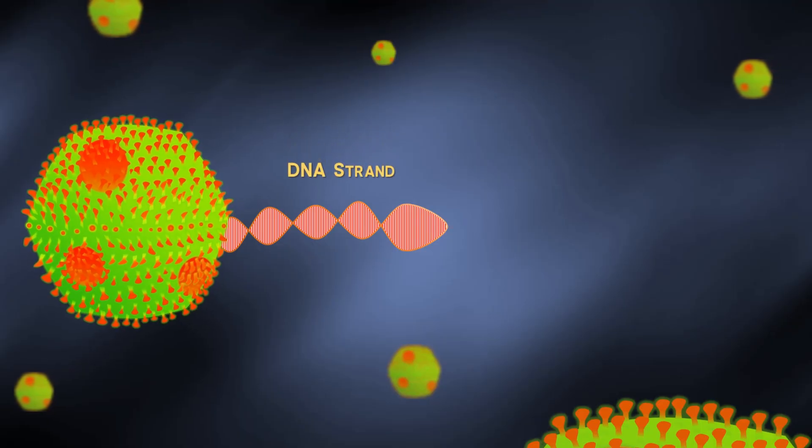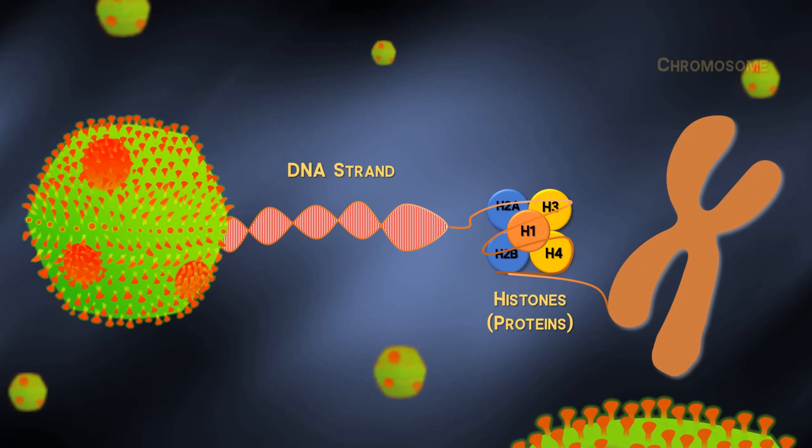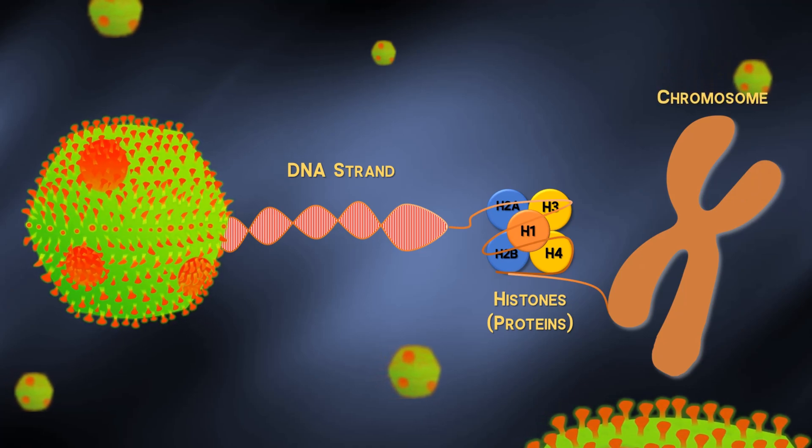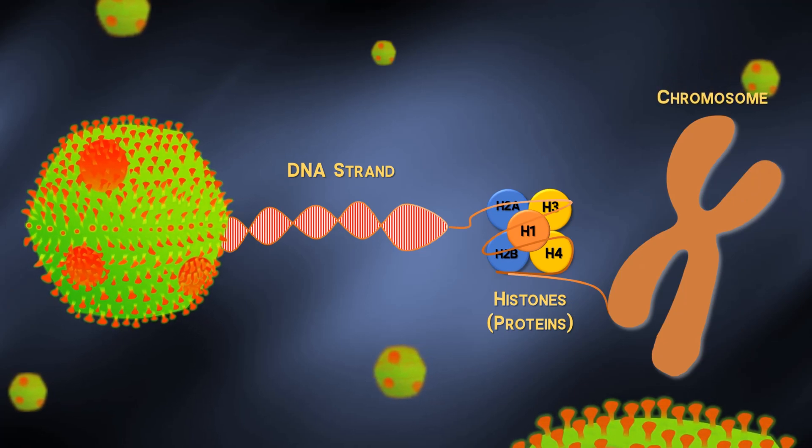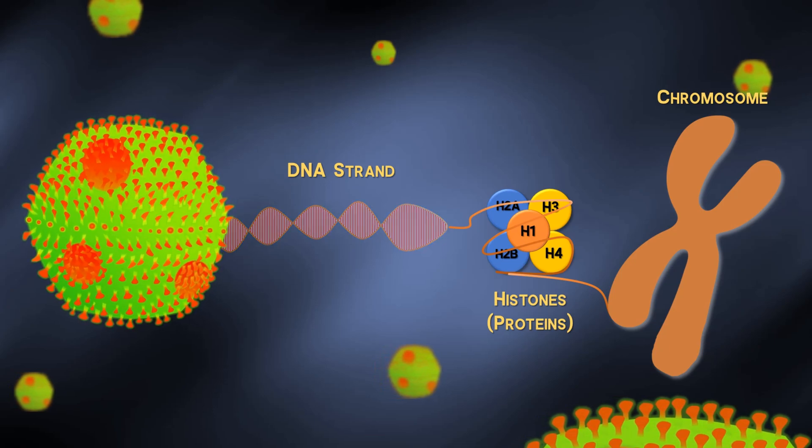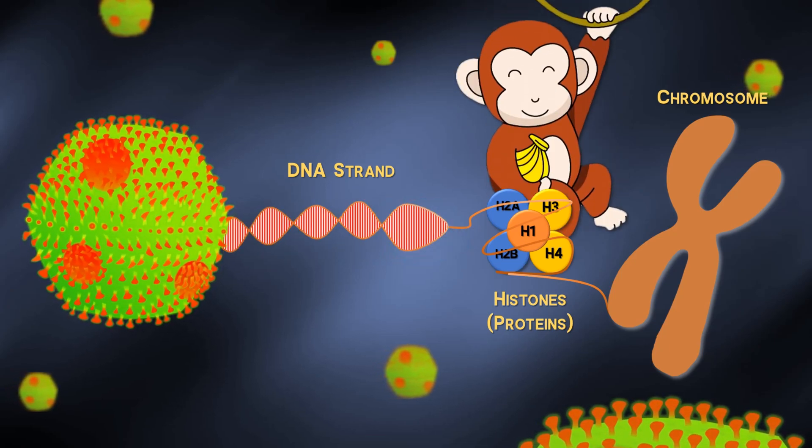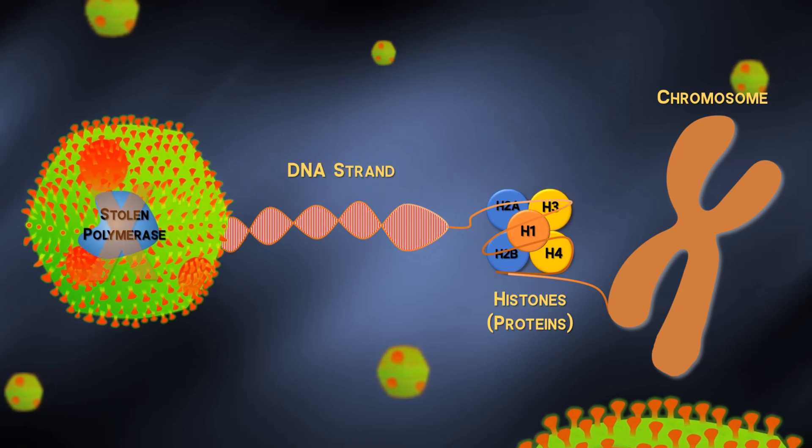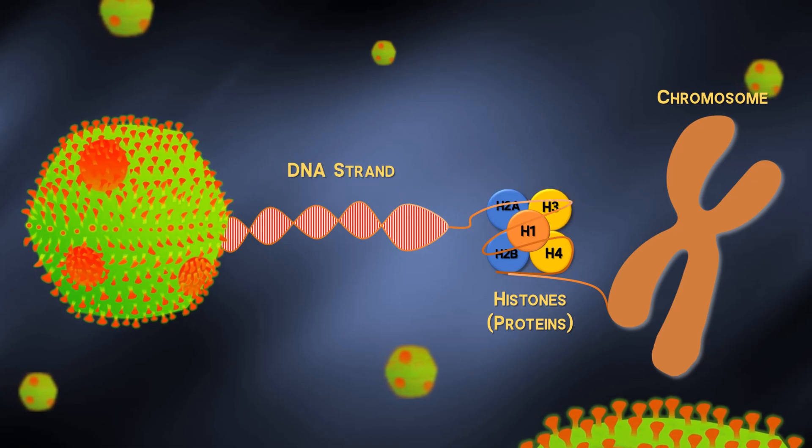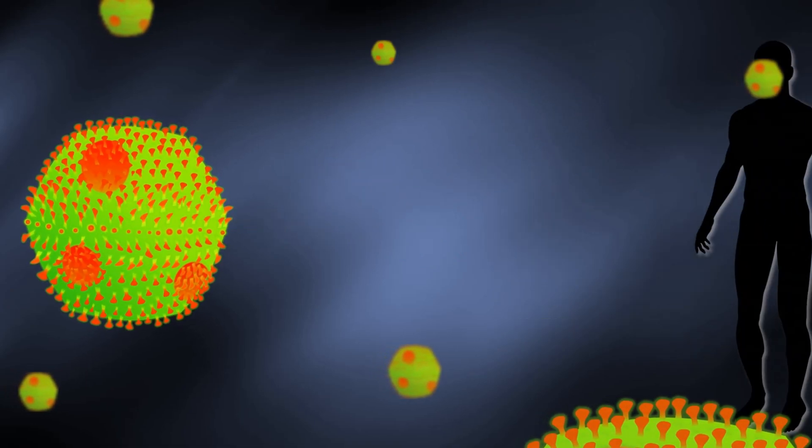But what baffles scientists most is that the Medusa virus has histone proteins needed to coil DNA. But you see, viruses are simple organisms and don't have much DNA to assemble and organize unlike humans do. They also discovered that it has ancient polymerase needed to synthesize DNA, like in complex organisms.